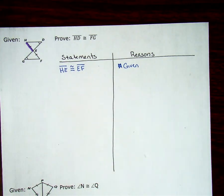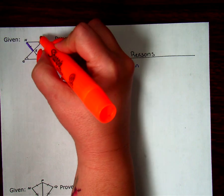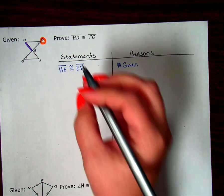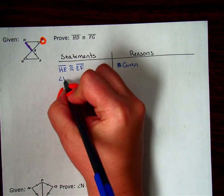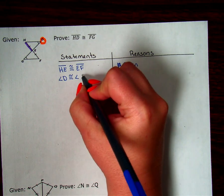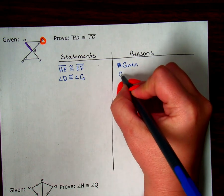Let's see what else was given to me in the picture. In the picture, I can see that angle D is the same as angle G, because they have the arc marks on them. So angle D is congruent to angle G, given by the picture.